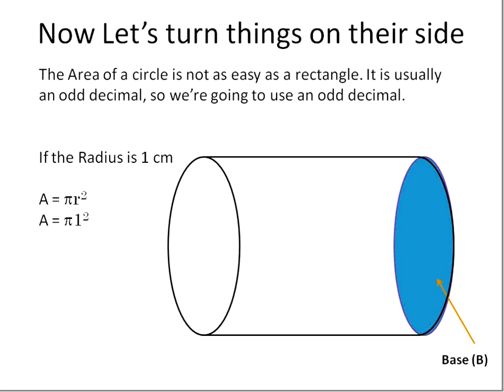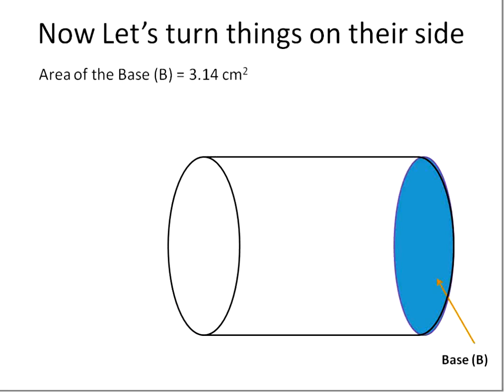So we would use the area equation and do pi times one squared. One times one is one. So the area of this would be about exactly pi or approximately three point one four. So in other words, if I were to draw the lines on this one, we'd get three point one four squares.